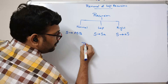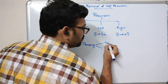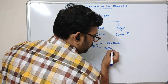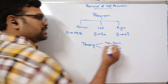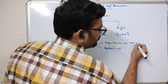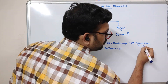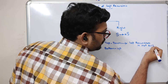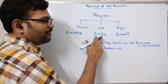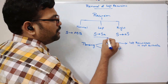During parsing, we can parse in two ways: top-down and bottom-up. For top-down parsing, left recursion is not suitable. There is no problem with normal recursion or right recursion, but if it is a left recursion, it is not suitable for top-down parsing. That is why we need to remove left recursions from the productions.